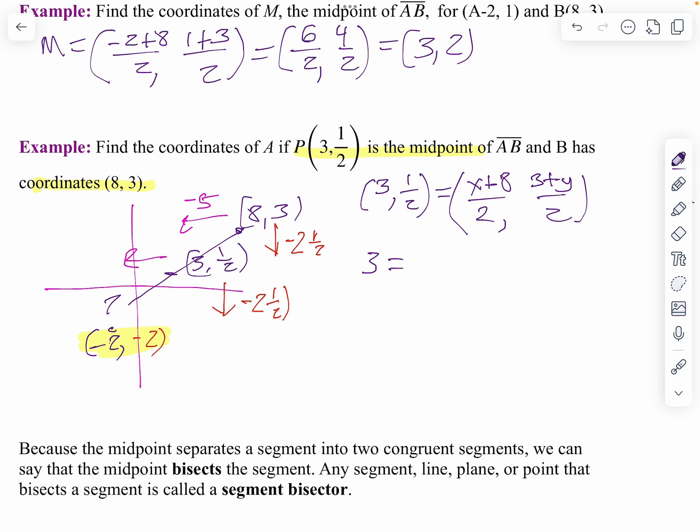So 3 equals x plus 8 over 2. Well then, let's get rid of the fraction, clear our fractions. We multiply by 2. 6 equals x plus 8. I minus 8 from both sides. 6 minus 8 is negative 2. Notice I get the same answer.